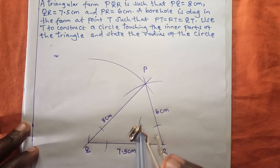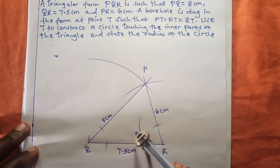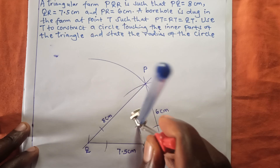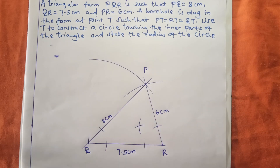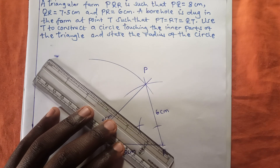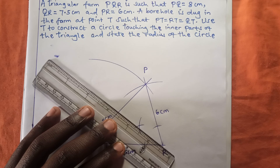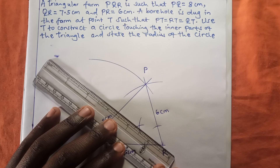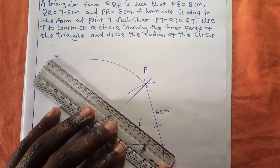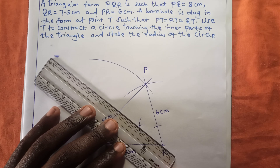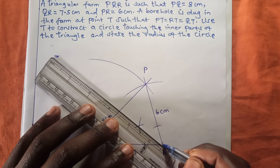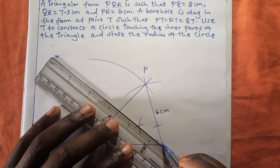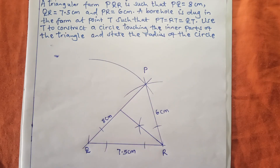I will stand at the arc I just made and cross the first arc. There is a point where the two arcs are going to meet. I want to join that meeting point to where we have R. So I use the ruler to make a straight line passing through the meeting point. This is the meeting point and the line passes through it clearly.